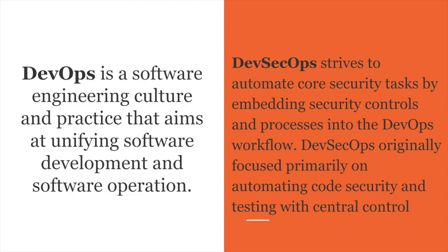DevSecOps is the practice of automating core security tasks by embedding security controls and processes into the DevOps workflow. DevSecOps originally focuses primarily on automating core security and testing with centralized control. Essentially, it is DevOps but with a security review and security findings integrated into the flow.